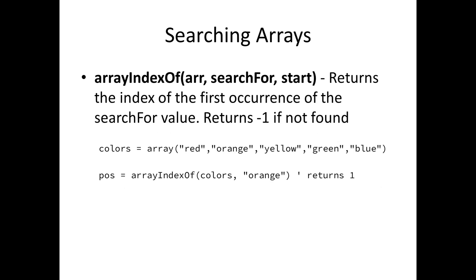We also have searching. Array index of is probably the most common one you'll use. We have a few others that are more complex — we're not going to go into them in this presentation, but they are documented. Array index of will search for a value in an array and return the index. If it doesn't find it, you get a value of negative one, which means it's not in there. Here in our colors array, we're looking for orange, and array index of will return one because orange is at the zero-one position.